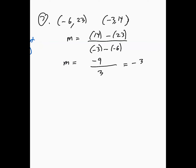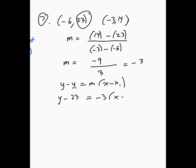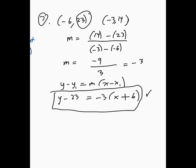The next step is to use the formula y minus y1 equals m times x minus x1. So y minus 23 equals negative 3 times x minus negative 6, and since subtracting a negative becomes positive, write x plus 6. That is the point-slope form. Then to get slope-intercept form, distribute: negative 3 times x minus 18, add 23 to both sides, and y equals negative 3x plus 5.